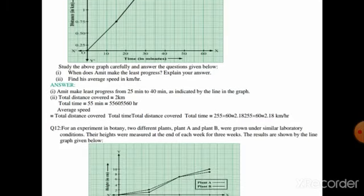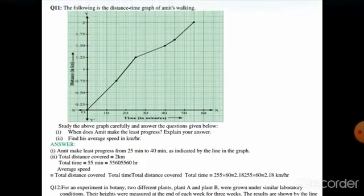In the first part, we have to tell when does Amit make the least progress and explain the answer. In the second part, we have to find the average speed in kilometers per hour, so we also need to convert it into kilometers per hour.